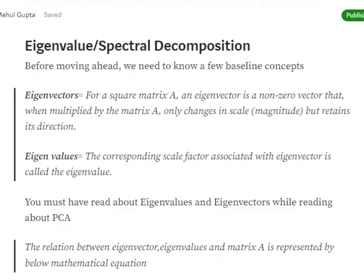Before moving ahead, we need to know a few baseline concepts which we will be using while performing eigenvalue decomposition. What is an eigenvector? For a square matrix A, an eigenvector is a non-zero vector when multiplied by the matrix A, only changes in scale but retains its direction.